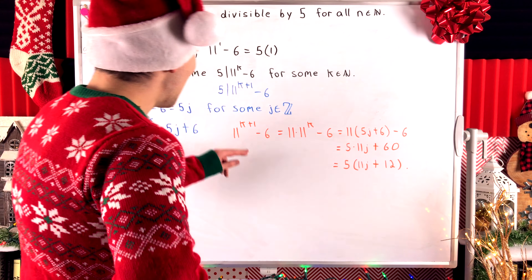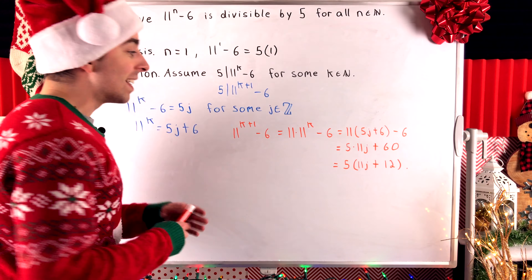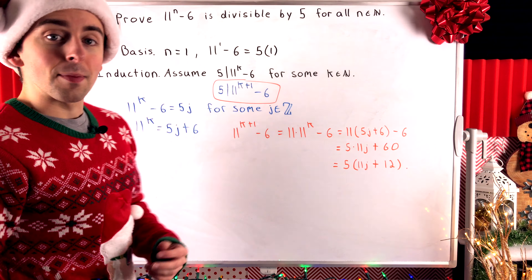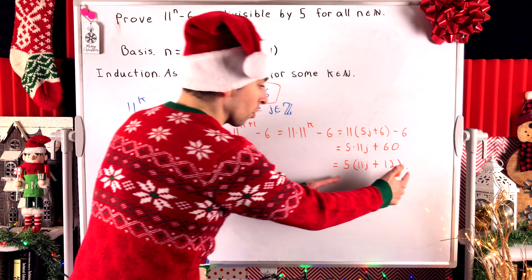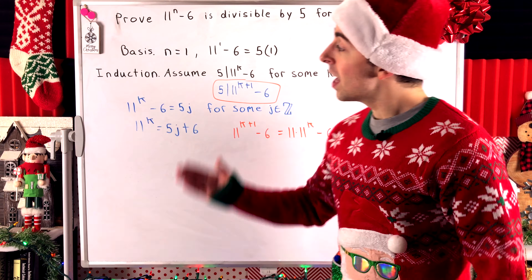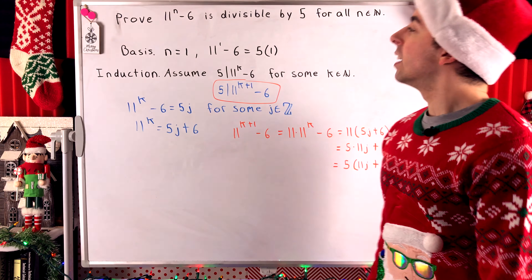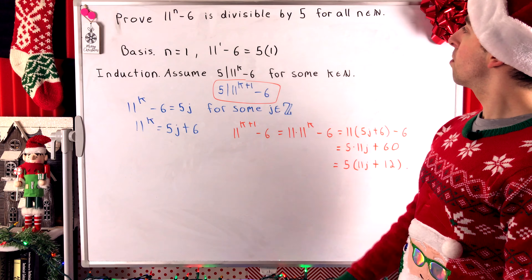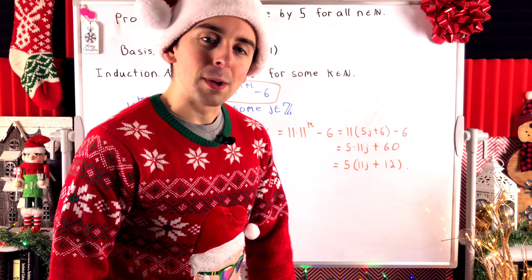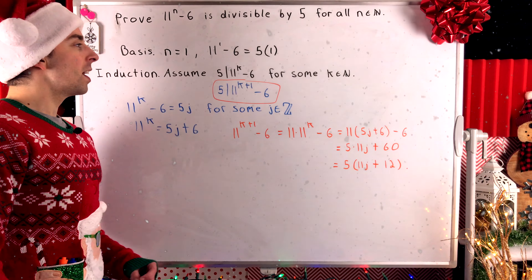Now, 11 to the k plus 1 minus 6 — we can rewrite 11 to the k plus 1 as 11 times 11 to the power of k, and then substitute our expression 5j plus 6 in for 11 to the power of k. That gives us 11 times (5j plus 6) minus 6. Now we distribute the 11 through the 5j plus 6 and do some simplification to see if we can factor a 5 out of the expression.